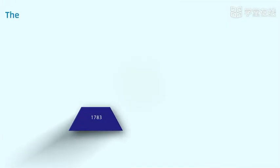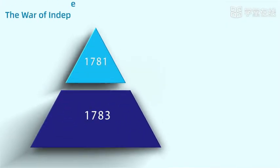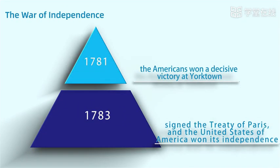At first, the war went badly for the Americans. After endless hard fighting, and with the help of France, in 1781, the Americans won a decisive victory at Yorktown. In 1783, the British and the Americans signed the Treaty of Paris, and the United States of America won its independence.